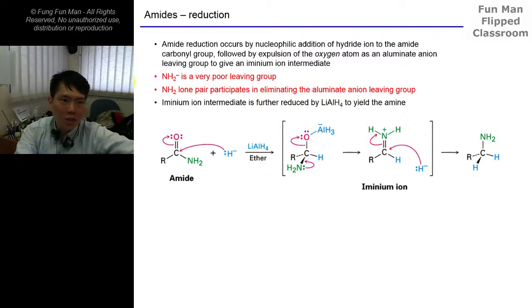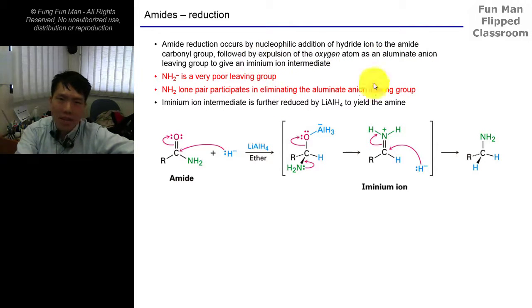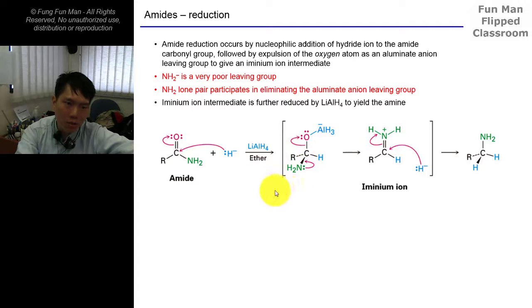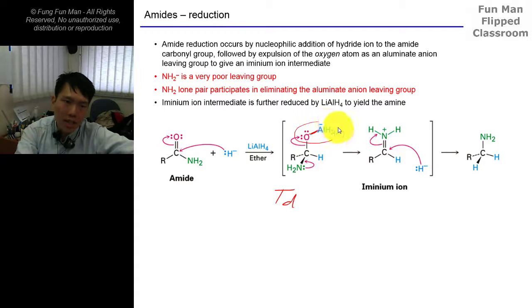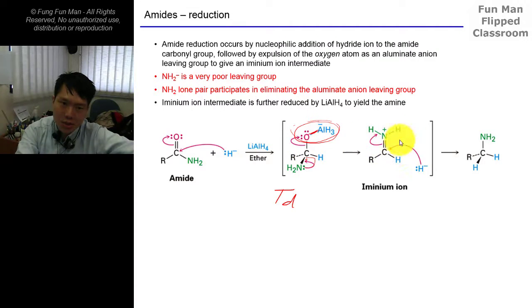Amide reduction occurs by nucleophilic addition of hydride ions to the amide carbonyl group, followed by expulsion of the oxygen atom as an aluminate anion. Step one: the nucleophile attacks and breaks the pi bond, going up to form a tetrahedral intermediate. The aluminum, which has an empty orbital, attaches to the oxygen, making it a good leaving group. The lone pair from nitrogen then forms the pi bond and kicks out this leaving group, giving you the amine.